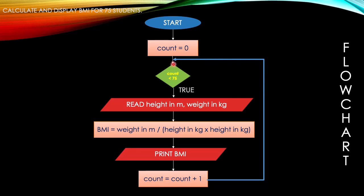Then we go back again to check the condition: 2 less than 75 — true or false? True. Good, then go to the process again, and we continue until count equals 75. So if 75 is less than 75 — true or false? It should be false.